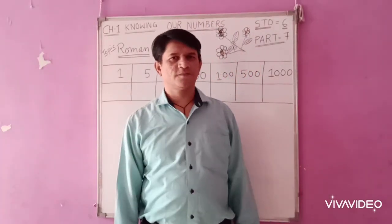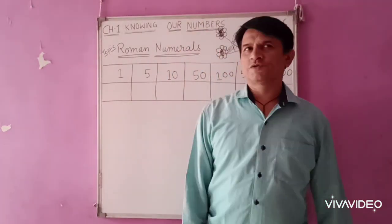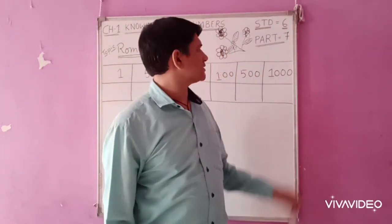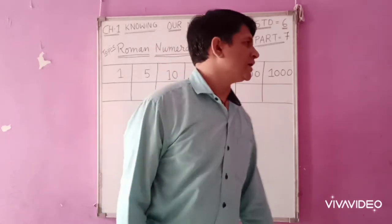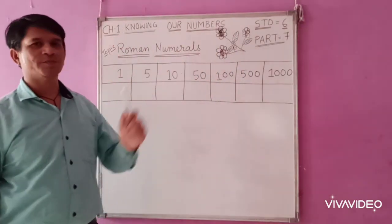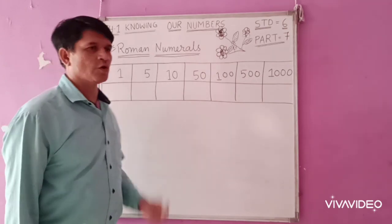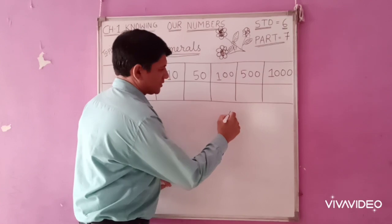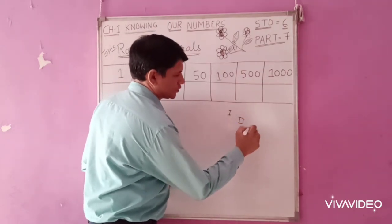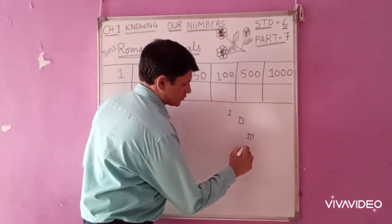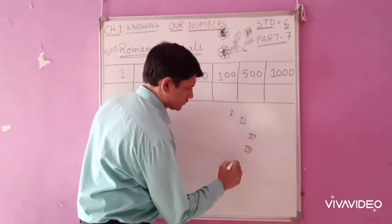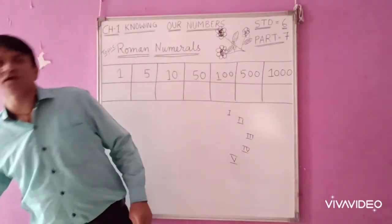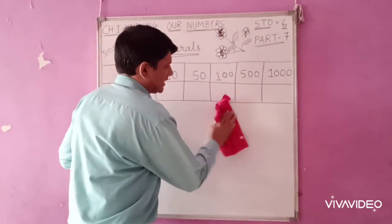Good morning students. Welcome to chapter 1, Knowing Our Numbers, class 6. This is the 7th part of the video. Today's topic is Roman numerals. You might have seen a Roman numeral clock — the numbers on it are written in Roman style. So today we are going to learn Roman numerals. Let us begin.